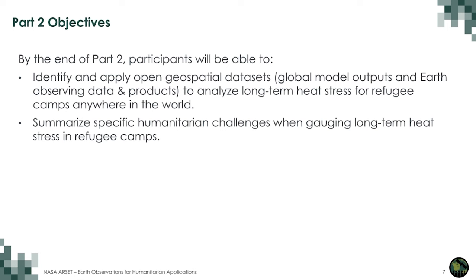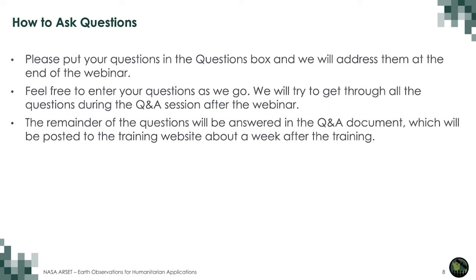The objectives for the second part of the training are as follows. By the end of part two, participants will be able to identify and apply open geospatial datasets, global model outputs, and Earth observing data and products to analyze long-term heat stress for refugee camps anywhere in the world, and summarize specific humanitarian challenges when gauging long-term heat stress in refugee camps. Please put your questions in the questions box and we will address them at the end of the webinar. The remainder of the questions will be answered in the Q&A document posted to the training website prior to next week's training.